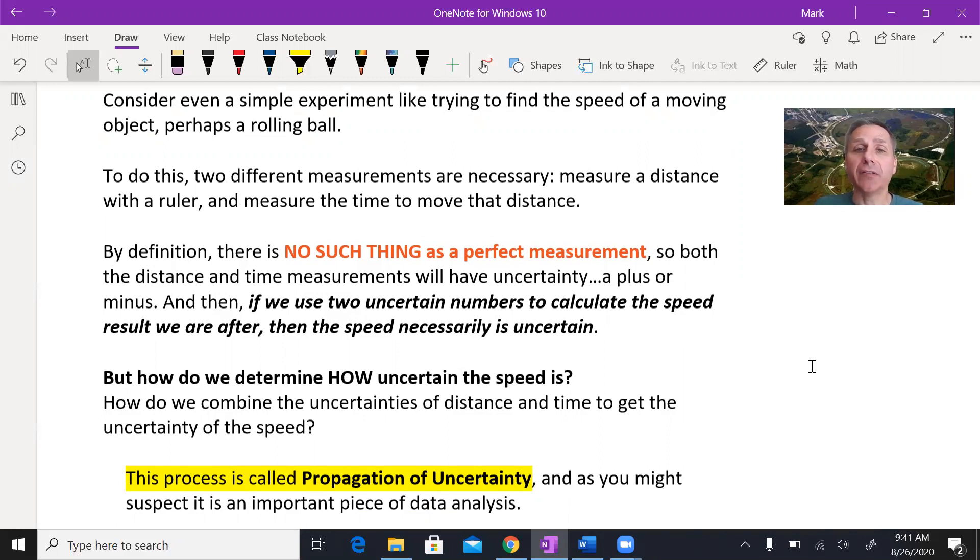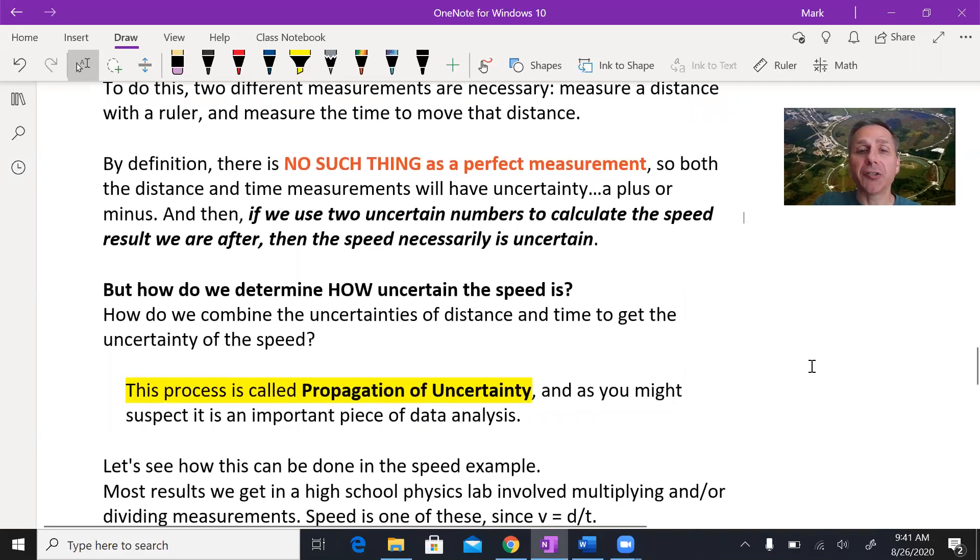So how can you use these imperfect measurements to calculate a result and then figure out how well do we know that result? How do you combine the uncertainties of the measurements to get the uncertainty of the result? That's something that we call propagation of uncertainty.